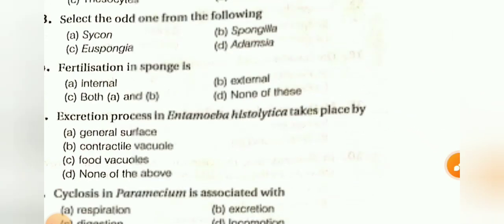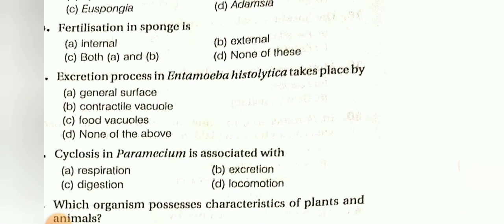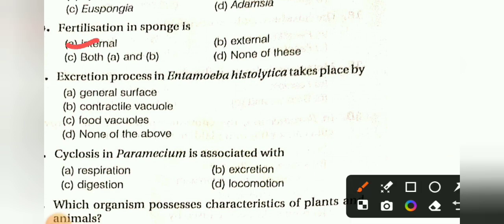Fertilization in sponges is: external, internal, both A and B, or none. The answer is internal. Excretion in Entamoeba histolytica takes place by: general surface, contractile vacuole, food vacuole, or none of these. The answer is general surface.